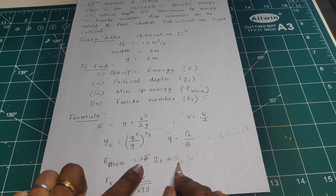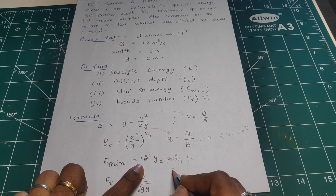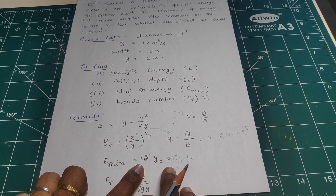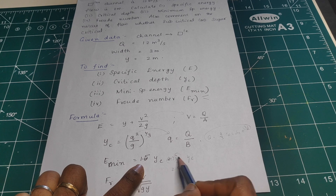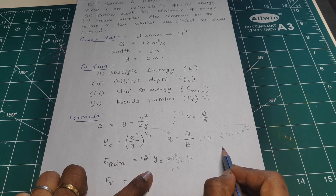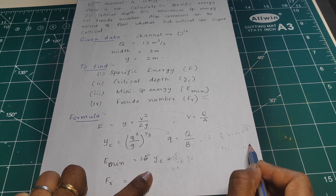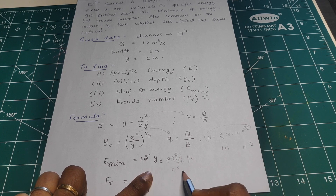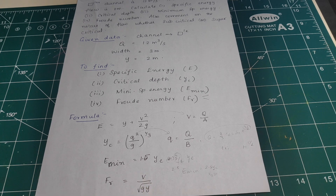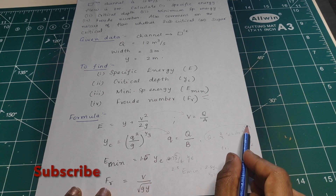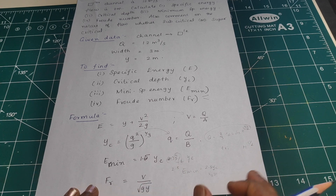Note: for a triangular section, E minimum is 2.5 yc — that is the formula for the triangular section. Do not confuse it with the rectangular section formula. For a rectangular channel, E minimum is 3 by 2 yc.